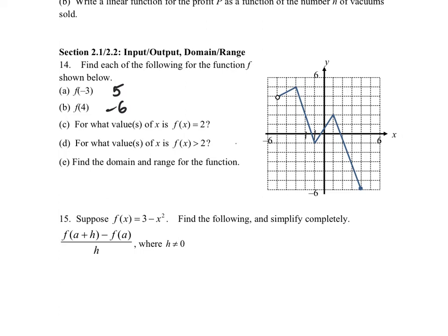For part c, we want the x-values where f(x) = 2. Instead of being given x, we're given a y-value. There are two x-values that work: x = 1 and x = negative 2. For part d, where f(x) < 2, we include everything below those two points, so x values from negative 2 all the way to 4 satisfy this.